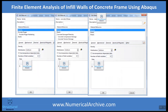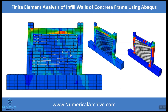We also define and assign concrete damage plasticity for concrete materials, and chose Drucker-Prager criteria for blocks. We also assign the plastic behavior of steel bars. Here are the results: pressure distribution and crack pattern.